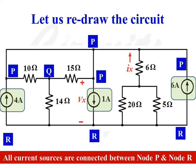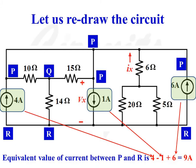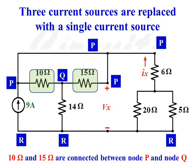Now we are going to redraw the circuit. All three current sources shaded in green color are connected between node P and node R, so they are connected in shunt. We can replace these three current sources with a single current source of value 9A, since 4A and 6A point towards node P while 1A points towards node R, giving an effective value of 9A.